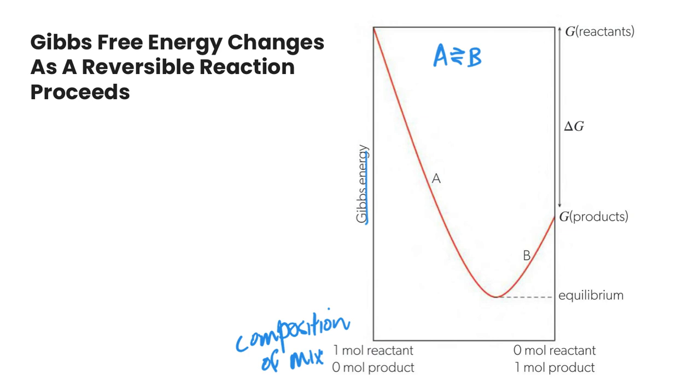If we take a look here, we got at the beginning one mole of reactant and zero moles of products. For this particular reaction, for this forward reaction, all through this section Gibbs energy is decreasing, so this would be spontaneous for the forward reaction.